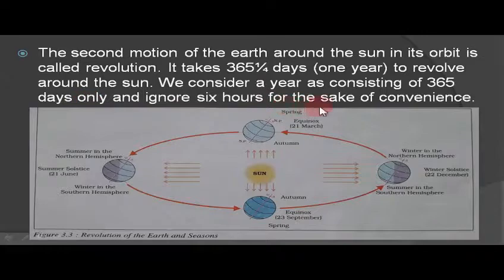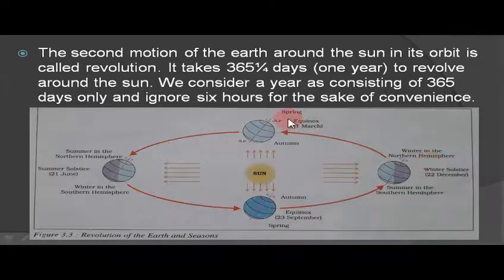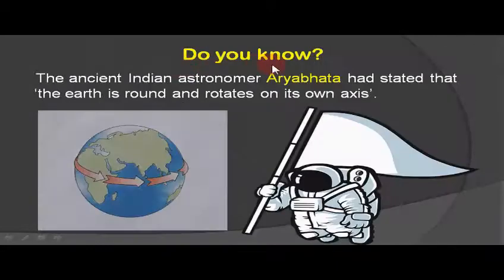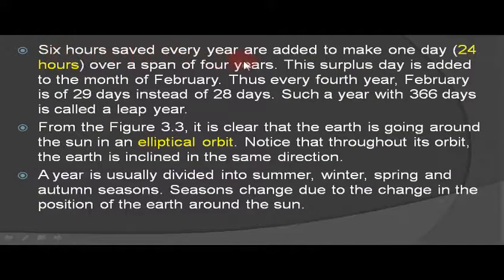We ignore the extra six hours for convenience. As you can see in figure 3.3, revolution of the earth causes different seasons — summer, winter, autumn, and spring — with the sun in the middle. The ancient Indian astronomer Aryabhata had stated that the earth is round and rotates on its own axis. The six hours saved every year are added to make one extra day over four years.